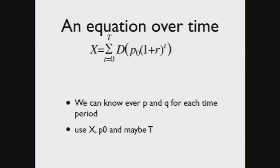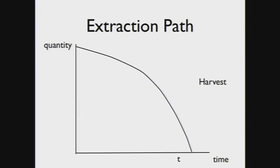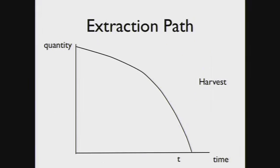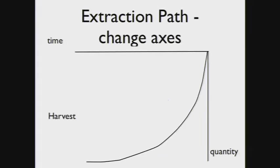Using this equation, we can figure out the price and quantity for all time periods. We know the total stock, the starting price, and how many time periods we're analyzing. The extraction graph shows how much we harvest over time. Time is on one axis, harvest rate on the other. At time zero we're harvesting a lot. As we get closer to our final time period, we're harvesting less and less as we use up the stock. At the end, the price is really high so we sell a little bit of something very valuable. Initially we sell a lot when it's cheaper.